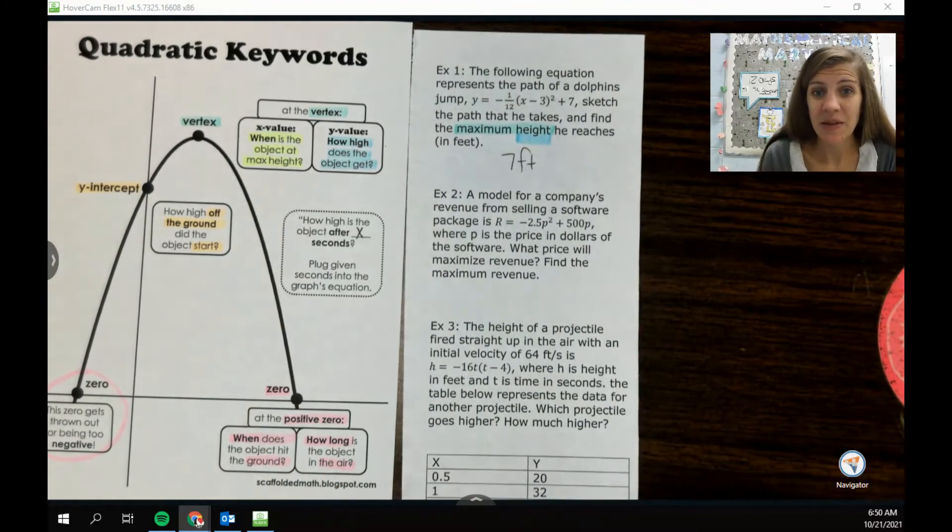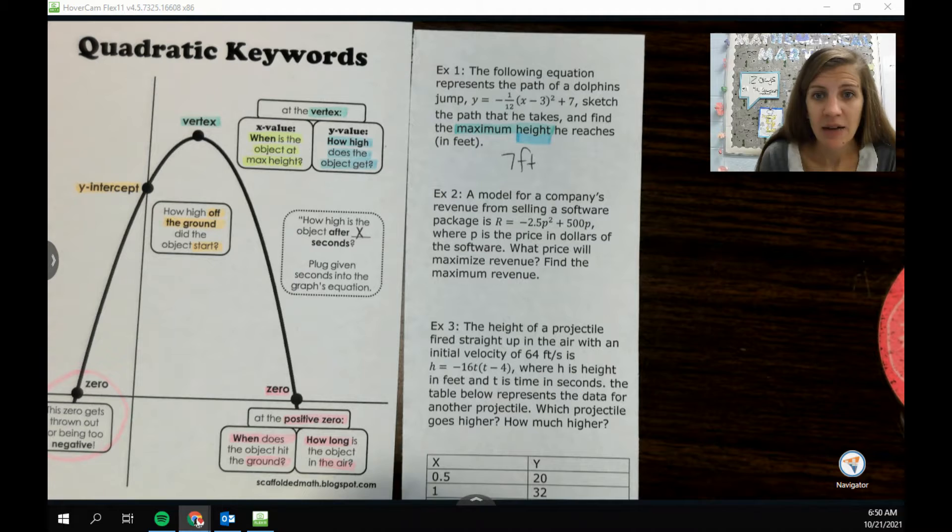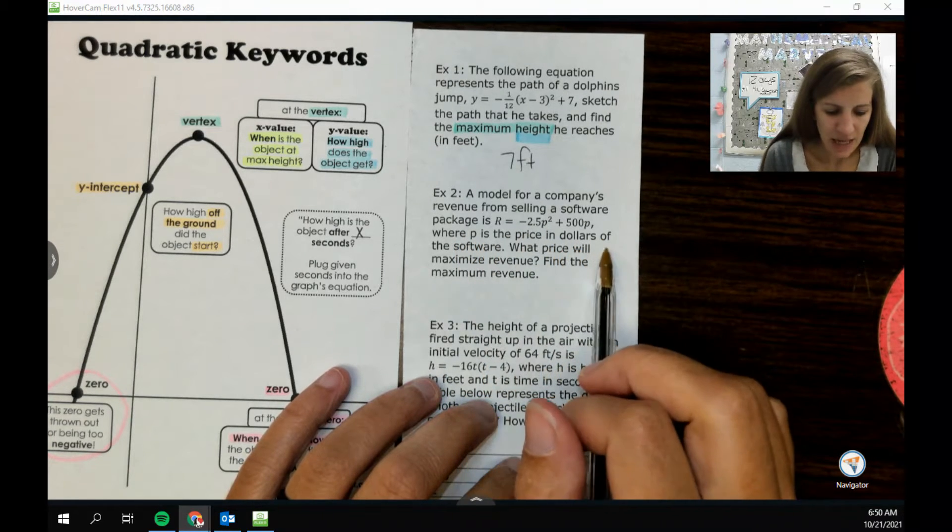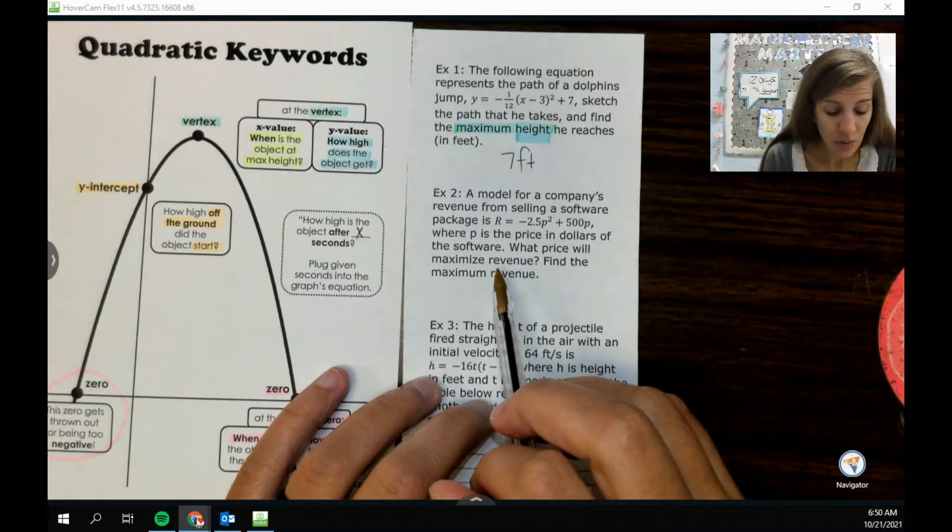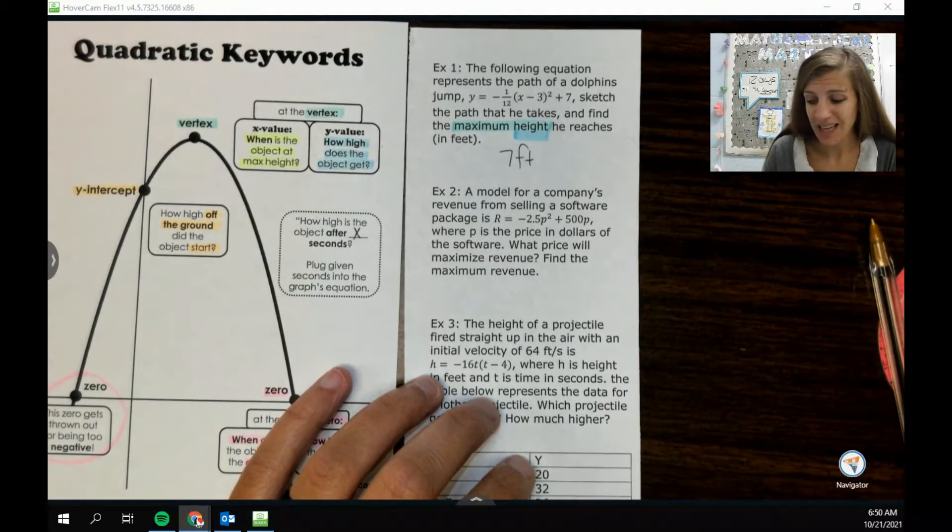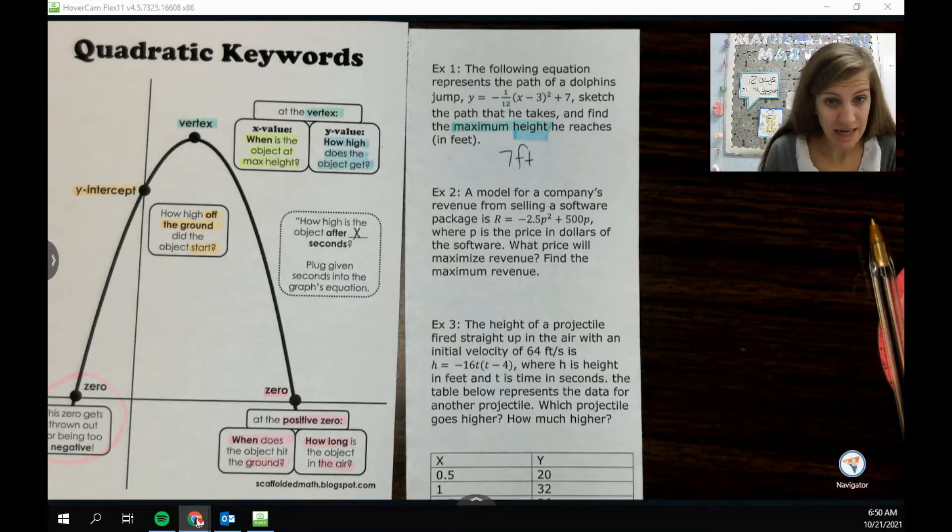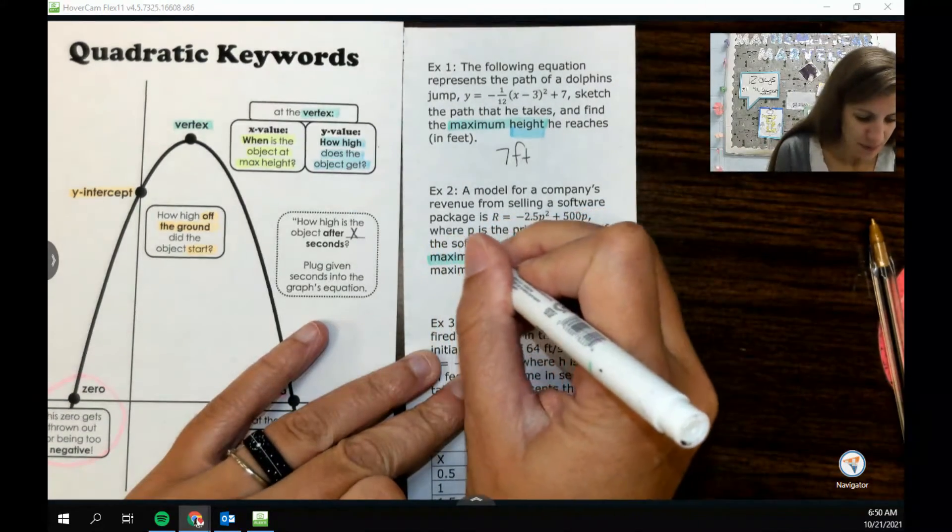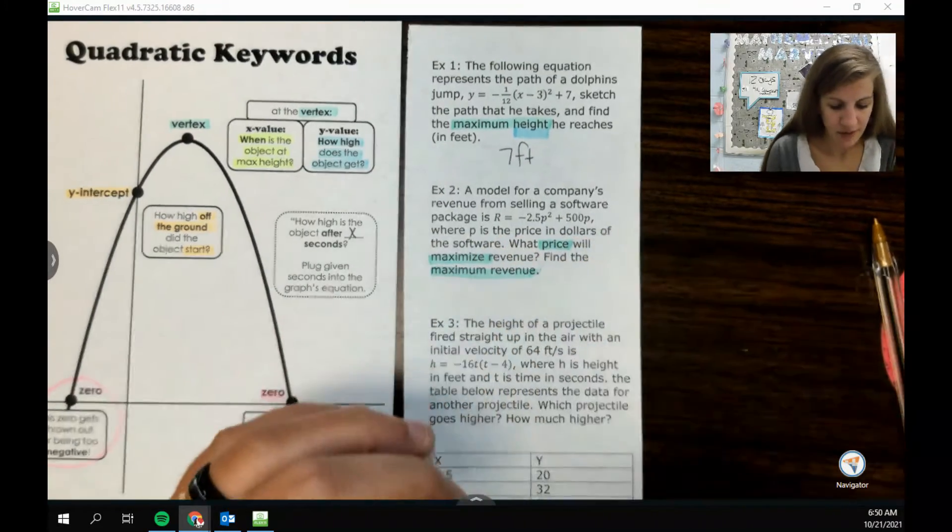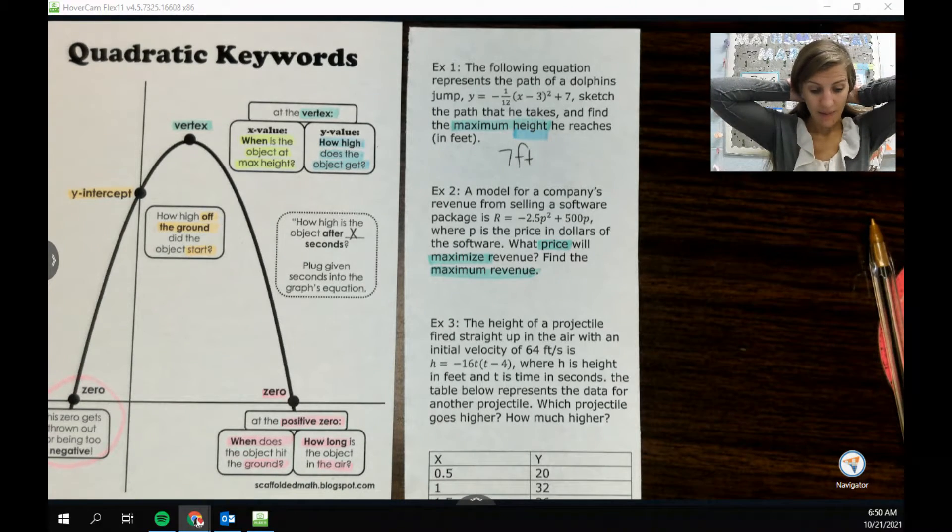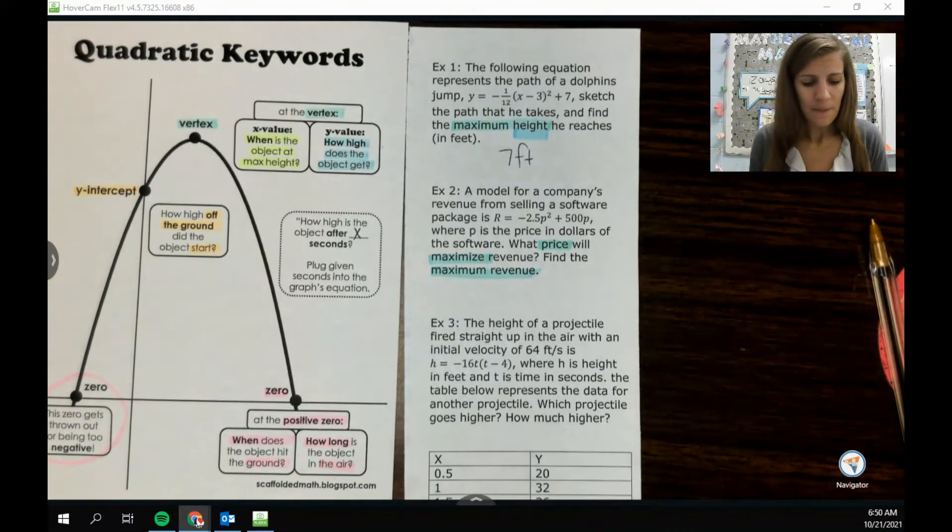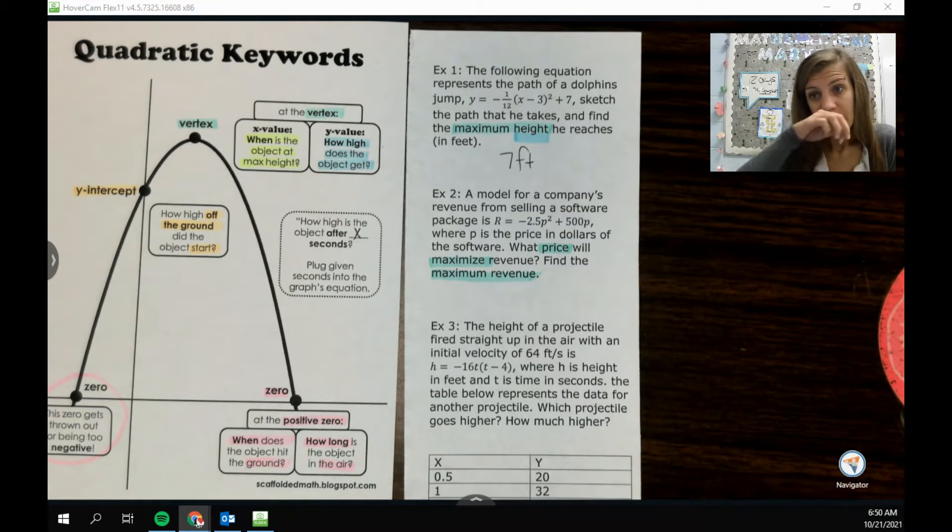All right, looking at example two. A model for a company's revenue from selling a software package is blah blah blah, where p is the price in dollars of the software. What price will maximize revenue and find the maximum revenue? So kind of got that keyword maximize again. But this time they do want two things, the price and what is the max revenue. So they do want two things here. But since it's the maximum I think it's just both the values at the vertex, so I don't know that I necessarily need to sketch this one out.